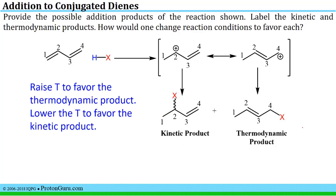To alter reaction conditions to favor a specific product: raise the temperature — say 40°C or 60°C — to favor the thermodynamic product, or do the reaction at a lower temperature, maybe 0°C, to favor the kinetic product. You should also note that the chiral center in the kinetic product means you'd get a racemic mixture of that product.